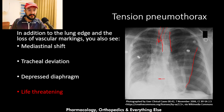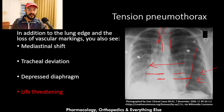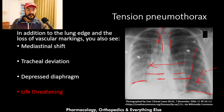Normally one third of the heart is to the right and two thirds are to the left. But in this picture more than two thirds of the heart are to the right, so the heart is shifted to the right side. In tension pneumothorax, air entering the chest cannot leave, so it keeps pushing all organs away, causing mediastinal shift, tracheal shift, and a depressed diaphragm. The left diaphragm here is quite depressed compared to the elevated right diaphragm, because the air is pushing the diaphragm down.